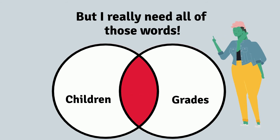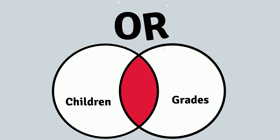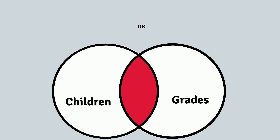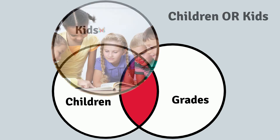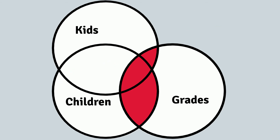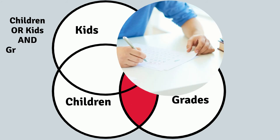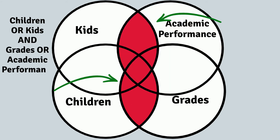But what happens when we can't take away anything else? Remember OR — we'd still be happy to find sources that use the words 'children' or 'kids'. So let's search for 'children OR kids AND grades'. The red area gets bigger. If we search 'children OR kids AND grades OR academic performance', the red area gets even bigger.